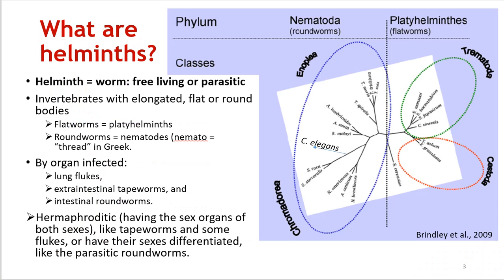So what are helminths and why are they so important in our daily lives? Helminths are worms — they can be free-living or parasitic. Looking at this phylogenetic tree, there are practically two types of helminths in the broadest classification: they can be called flatworms or platyhelminths, or roundworms which are also called nematoda. They are also named by the organ they infect — lung flukes, extraterrestrial tapeworms, and intestinal roundworms.